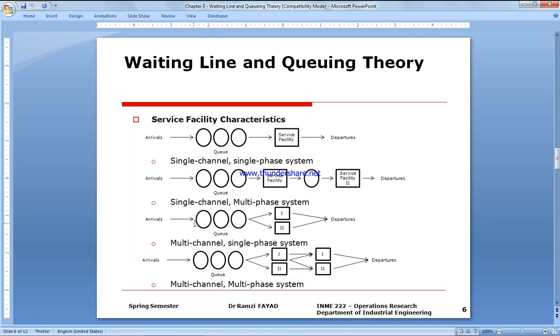In this video we're going to explain how to do the waiting line queuing theory in Arena simulation. The easiest one is single channel single phase, where you have people arriving to a system, entering a queue and a service station. They wait, are served by a server, and they leave the system.